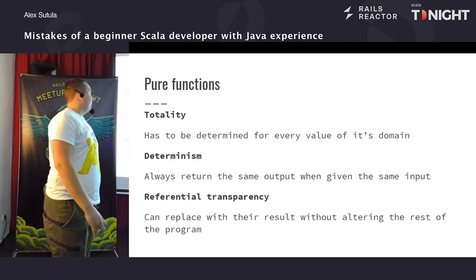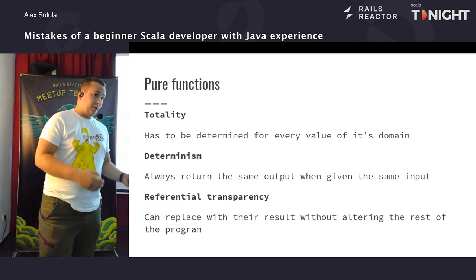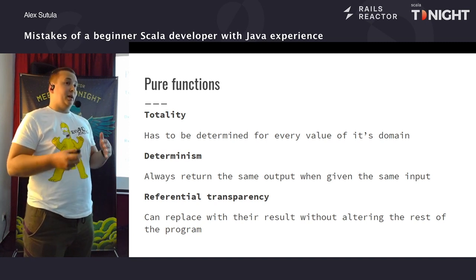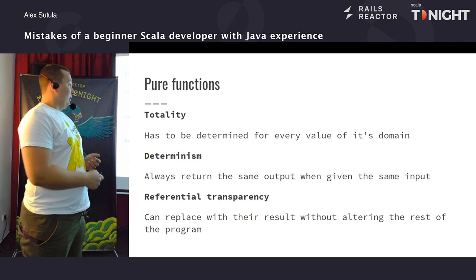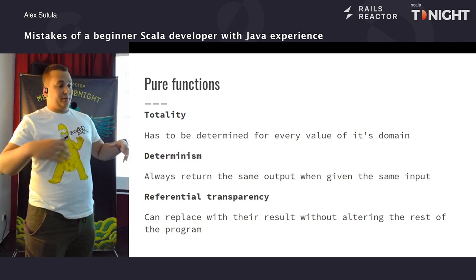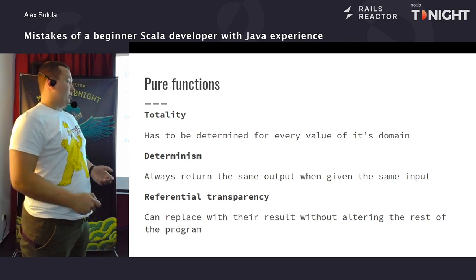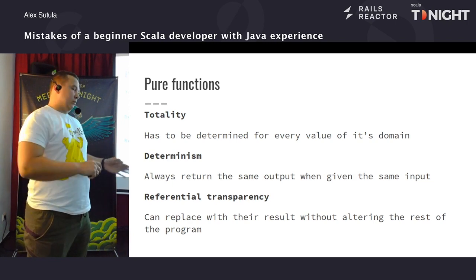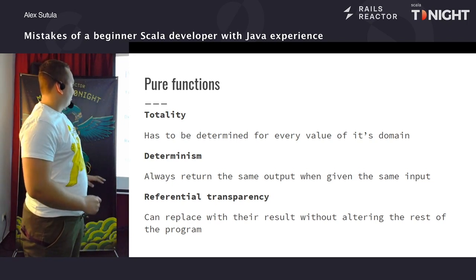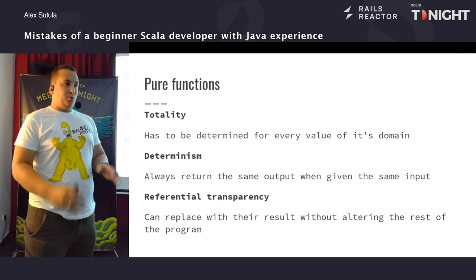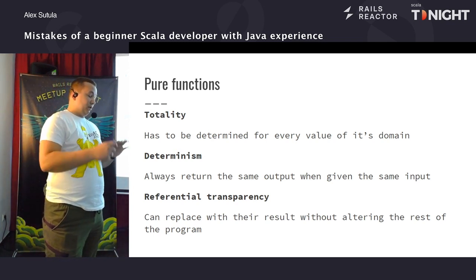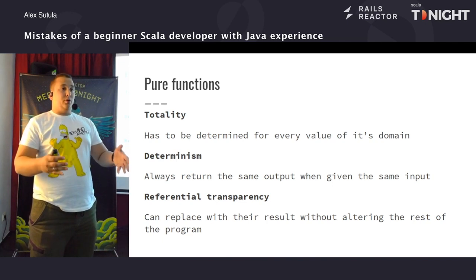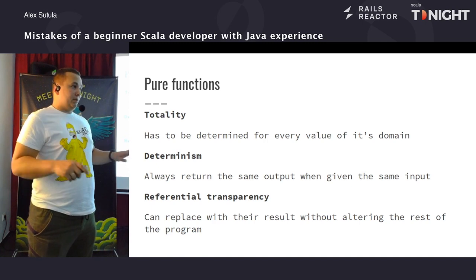Далі нам необхідно розглянути поняття: що таке чиста функція. На ній базується поняття функціонального програмування — в функціональному програмуванні немає стейту, і всі функції можуть конвертуватися в ланцюжок. Три умови для чистої функції: це totality — тобто вона визначена на всьому вашому домені; детермінізм — тобто при кожному інпуті у нас повертається той же самий аутпут; і referential transparency — це така властивість, що ми можемо взяти цю функцію, замінити її результатом, який вона повертає, і вставити в будь-який код без змін і без проблем.